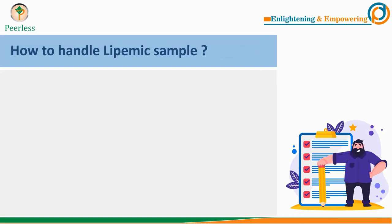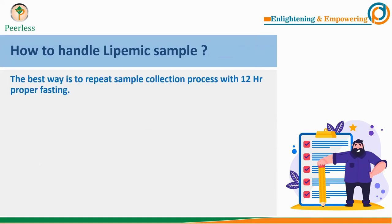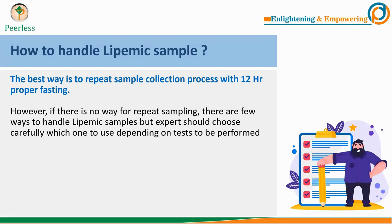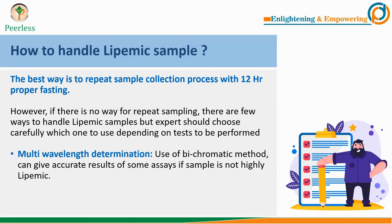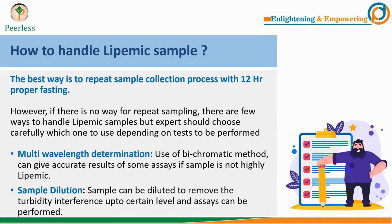The best way to handle a lipemic sample is to repeat the sample collection process once the patient has completed 12 hours of proper fasting. However, if repeat sampling is absolutely not possible, you can follow a few steps. First, you can perform the test using a multi-wavelength or bichromatic method if the sample is not highly lipemic. Second, you can perform sample dilution to reduce the turbidity interference, and up to a certain level the assay can be performed by multiplying the result by the dilution factor.